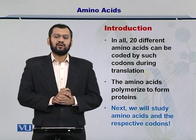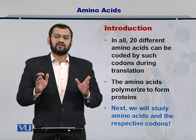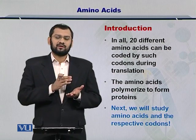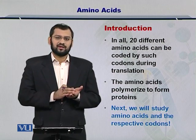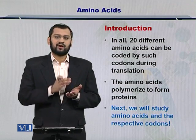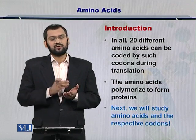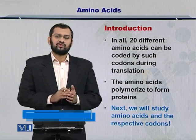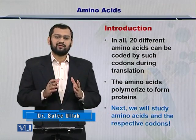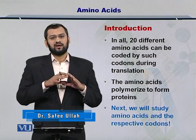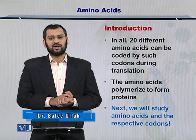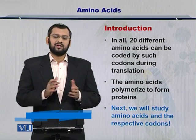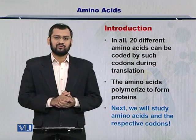In all, there are 20 different amino acids that can be coded by the codons in the RNA. If you have a codon with a different sequence, then it will code for a different amino acid. In total, there are 20 amino acids, and any combination of nucleotides arranged into a codon of three nucleotides can code for those amino acids.